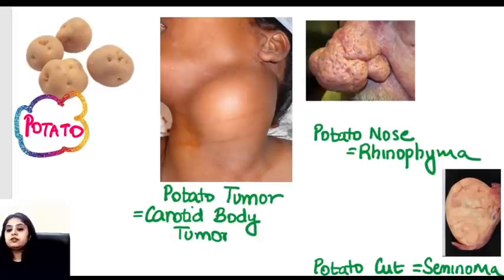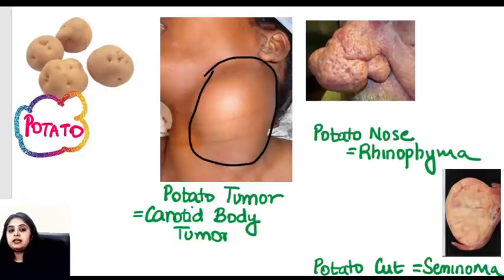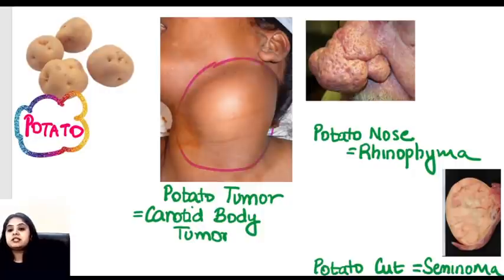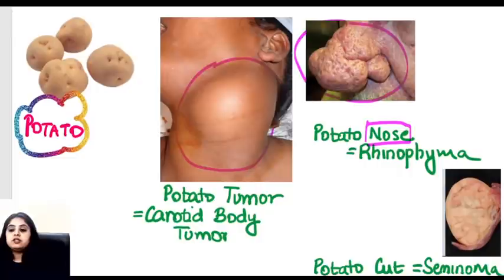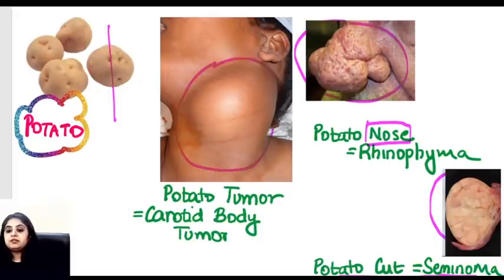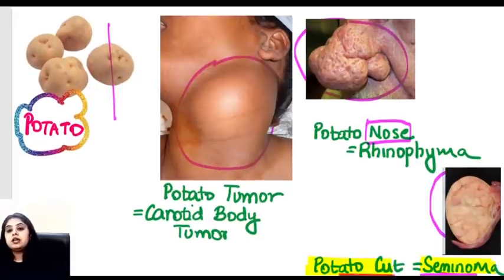Moving on to potato. The carotid body tumor presents as a potato-like swelling in the neck and is called the potato tumor. In ENT, potato nose refers to rhinophyma. In pathology, when a seminoma is cut, the cut surface gives an appearance as if you are seeing the cut section of a potato. Seminoma tends to show a potato-cut appearance.